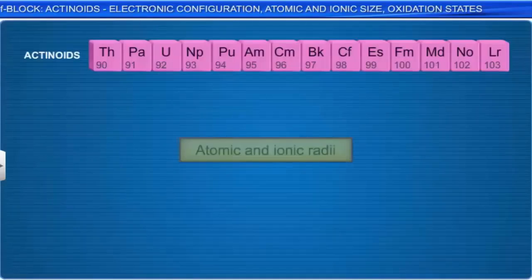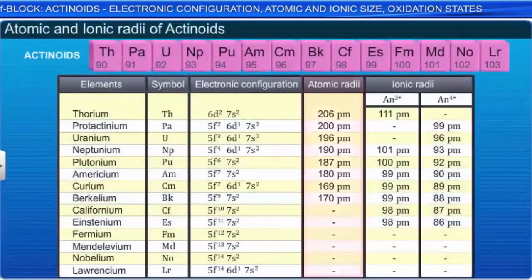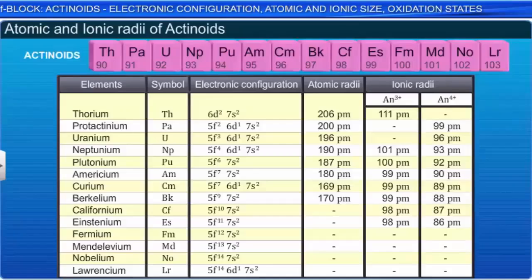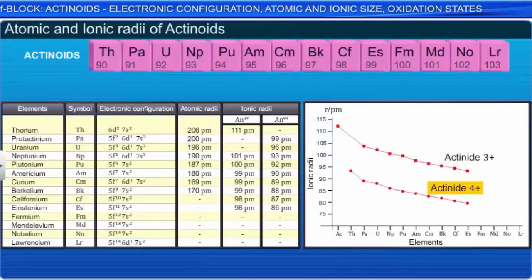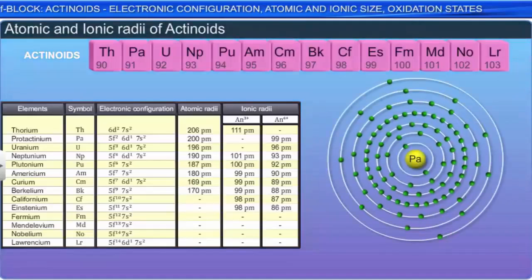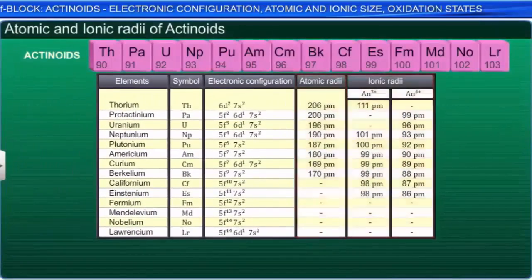The atomic and ionic radii of the tripositive and tetrapositive actinoid ions are given in the table. There is a steady decrease in the ionic sizes of the tripositive and tetrapositive ions, referred to as actinoid contraction. Due to the poor shielding by the 5f electrons, the contraction is greater from one element to another in the series.